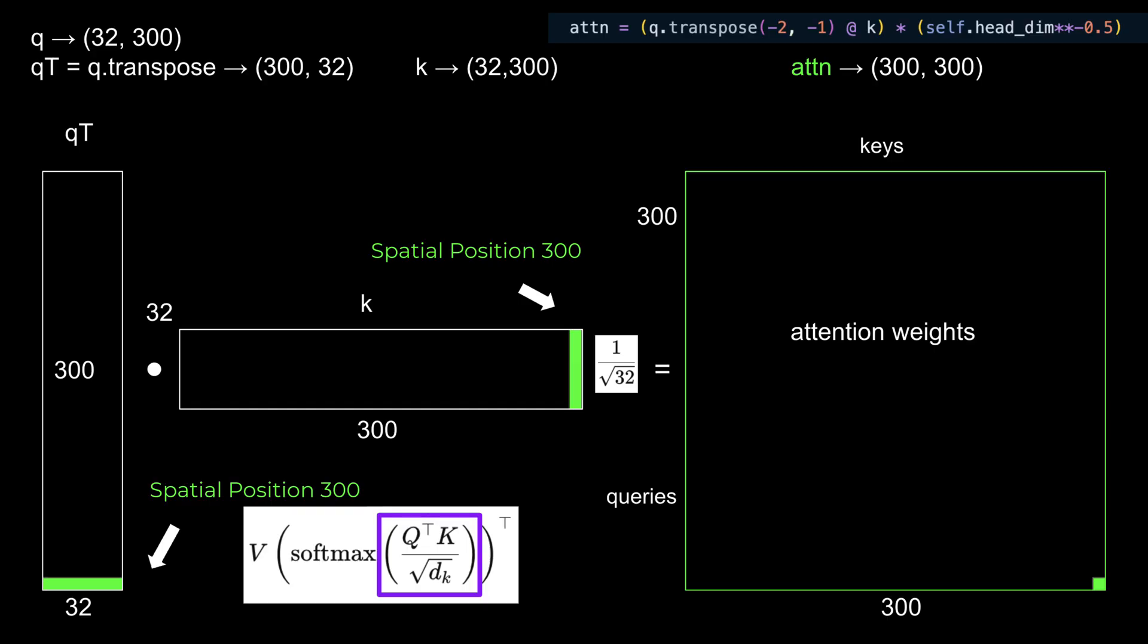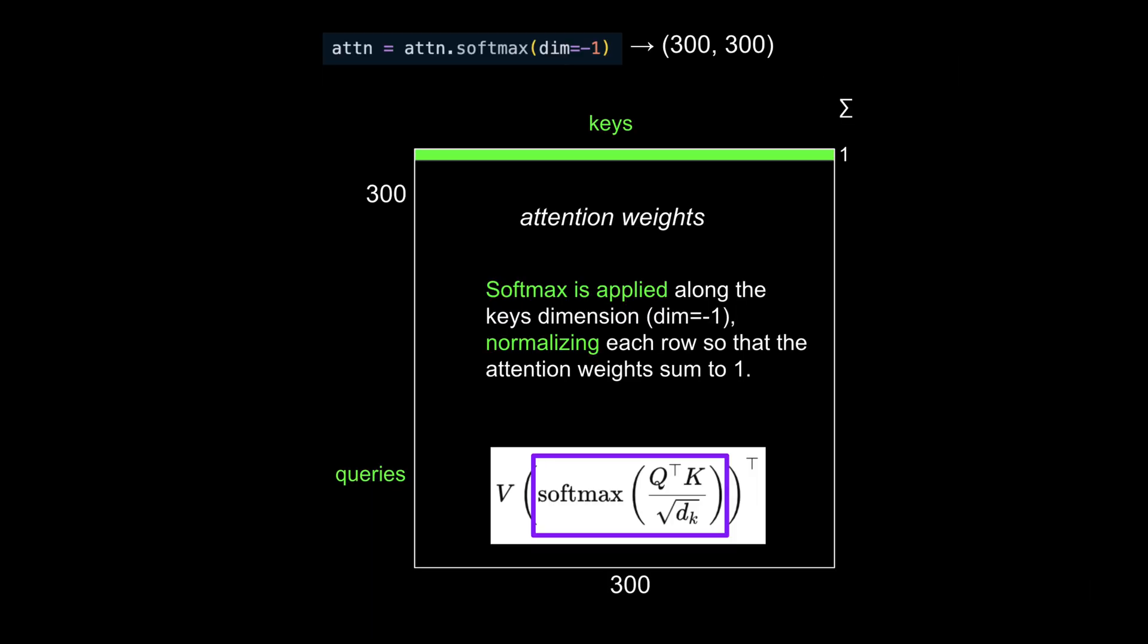However, the raw attention weights aren't interpretable just yet. They still need to be normalized. Without normalization, the attention weights lack a clear relative meaning, making it difficult to determine how much importance each key contributes to a given query. That's where the softmax function comes in. Softmax transforms the unnormalized attention weights into a probability distribution, ensuring the weights for all keys sum to one. This makes the weights interpretable, representing the relative importance of each key to its corresponding query. And with that, we'll end this video and jump into the next one as we prepare to visualize the attention scores.